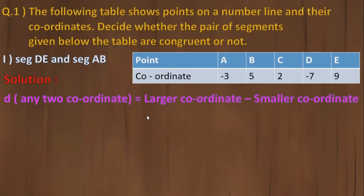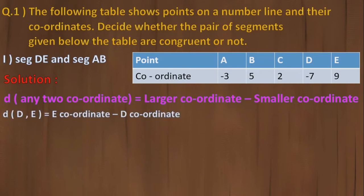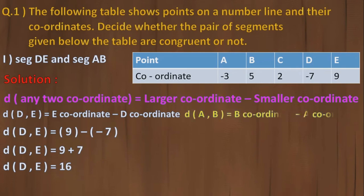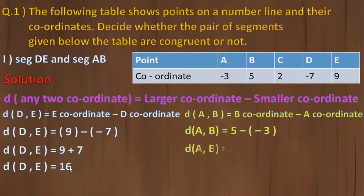The distance formula is: larger coordinate minus smaller coordinate. Let's find DE first. For DE, D has coordinate minus 7 and E has coordinate 9. E is larger, so E coordinate minus D coordinate: 9 minus (minus 7). Double minus becomes plus, so 9 plus 7 equals 16.